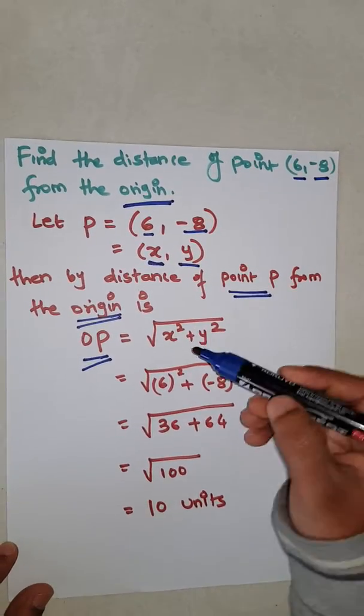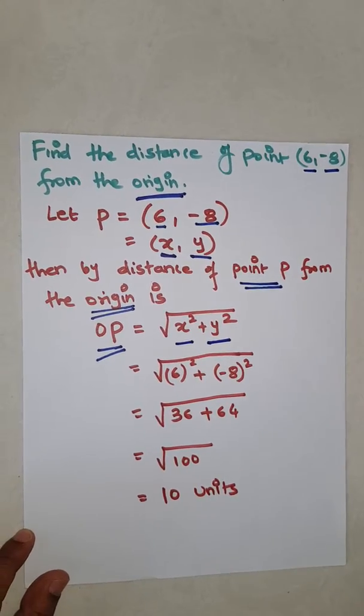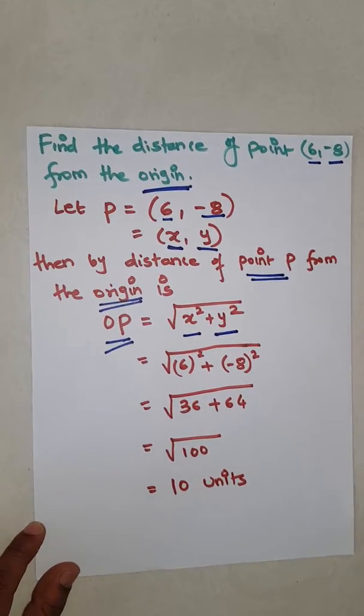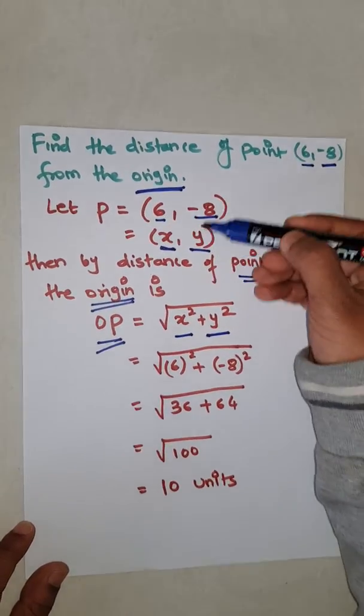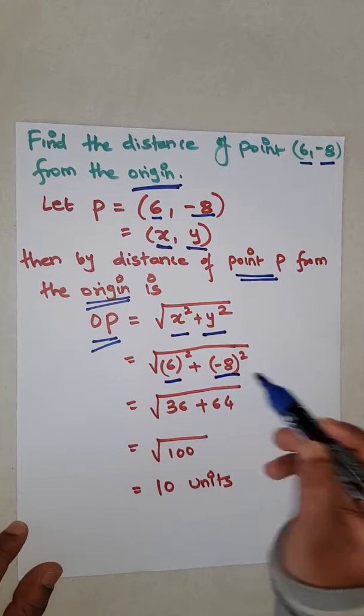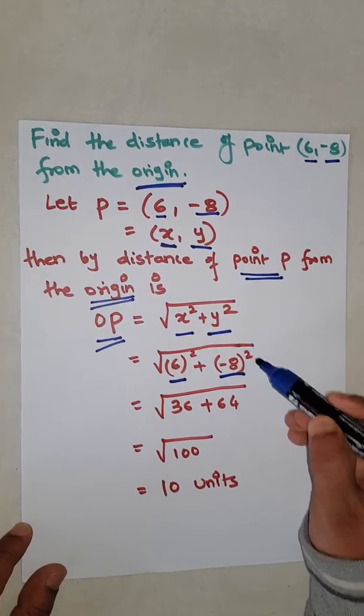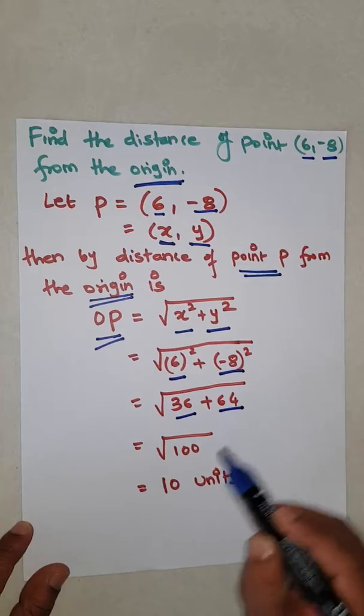The formula will be x square plus y square as it is from origin. The value of x and value of y we have to replace, and then square those two numbers.